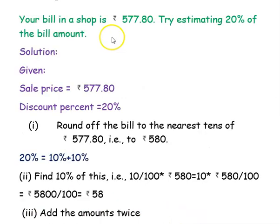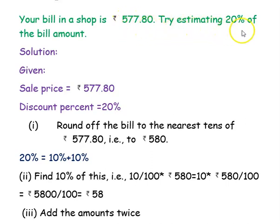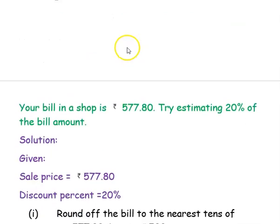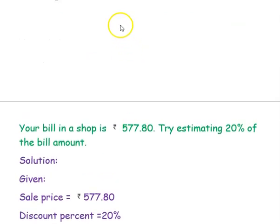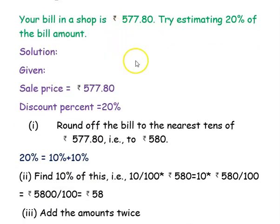The next example uses the same bill amount of rupees 577.80 — try estimating for a 20 percent discount. In the previous example we estimated for 15 percent; here we are going to estimate for 20 percent using the same process. The sale price is again rupees 577.80.